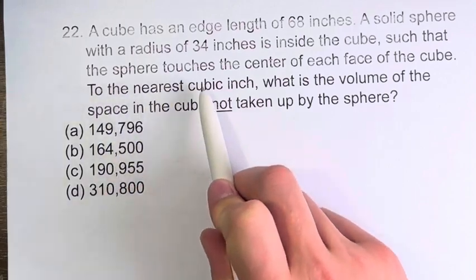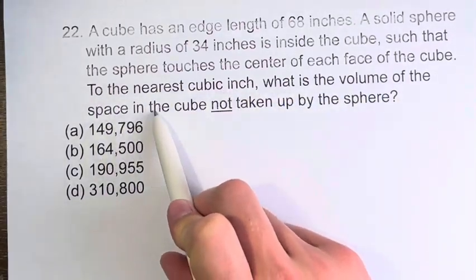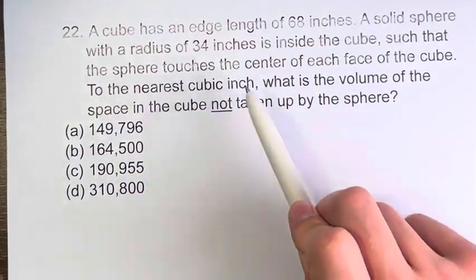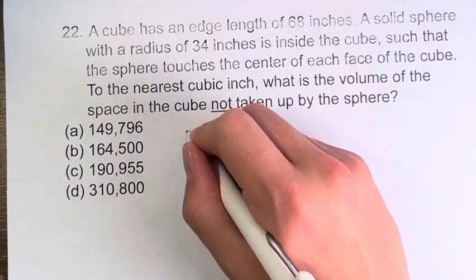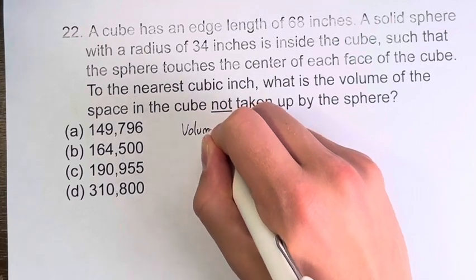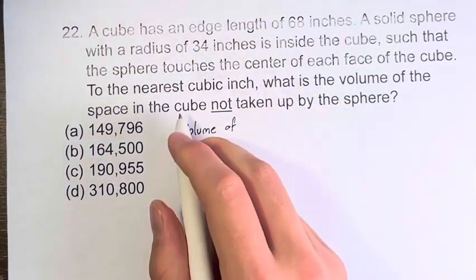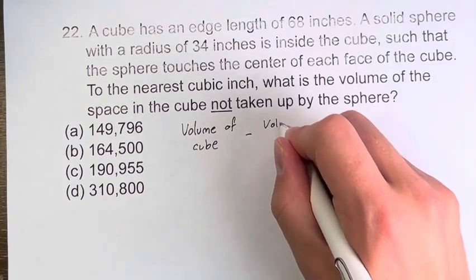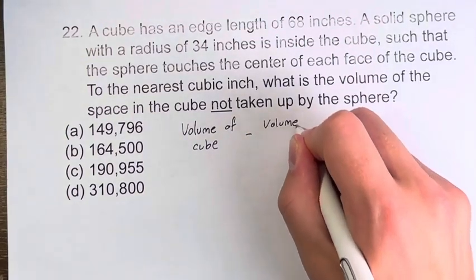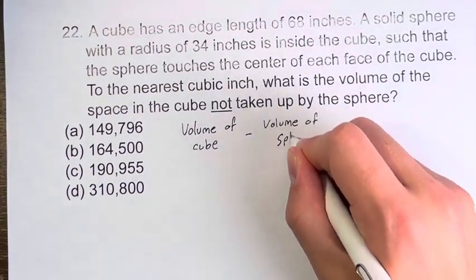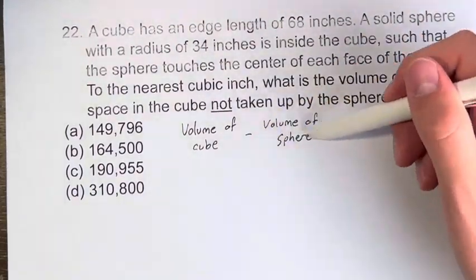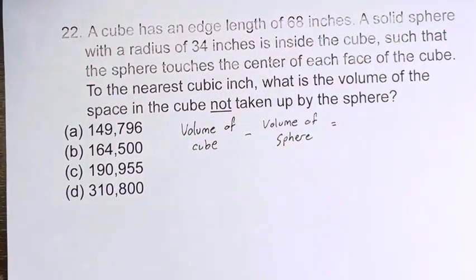We're asked, to the nearest inch, what is the volume of the space in the cube not taken up by the sphere? So if we're looking for the space in the cube not taken up by the sphere, we do the volume of the cube minus the volume of the sphere. This gives you everything that's left in the cube that's not contained within the sphere.